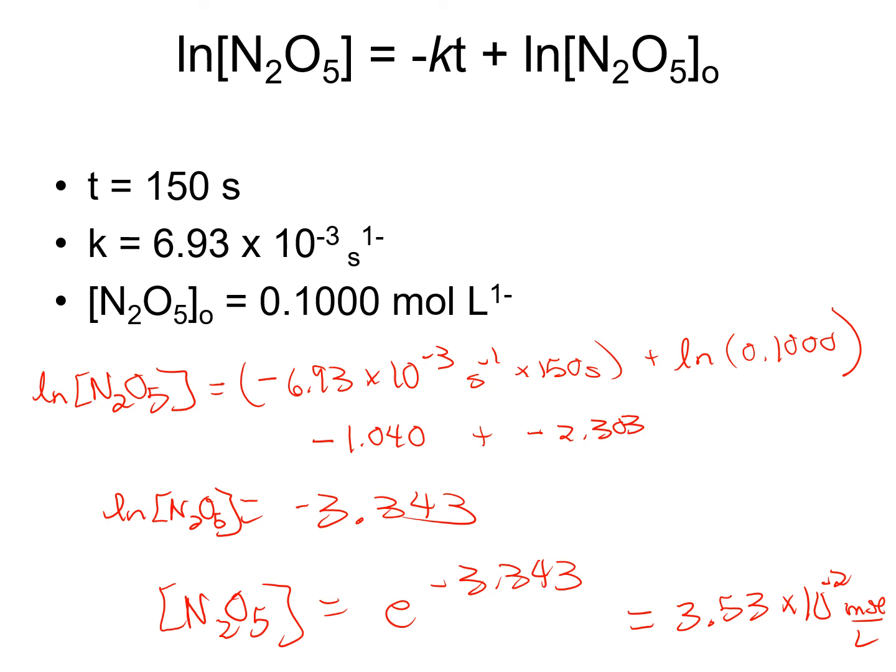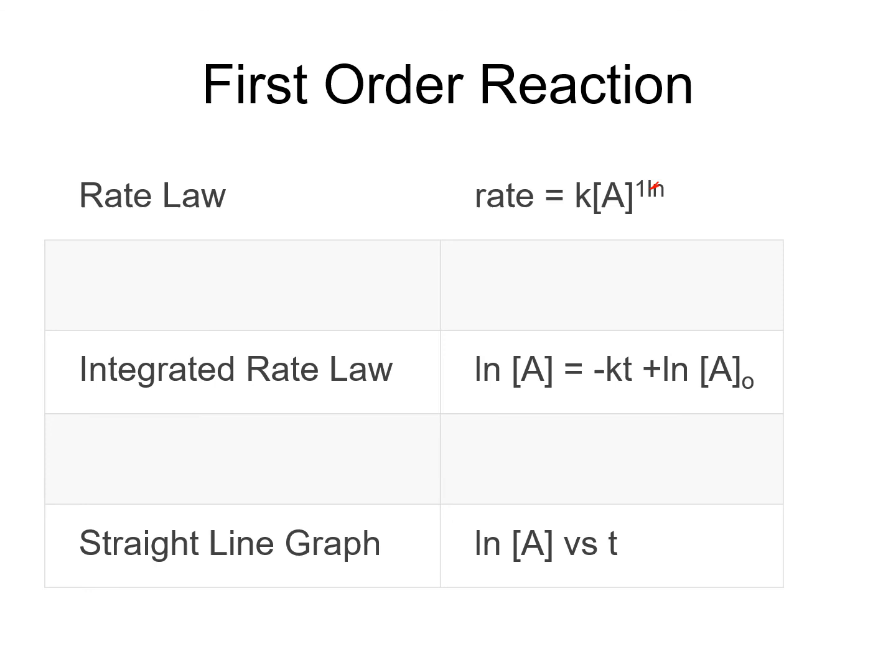In a first-order reaction, the differential rate law is rate equals k[A] to the first power. Your integrated rate law is ln[A] = -kt + ln[A]0. If you look on your reference sheet, you're going to see this written there. What you're looking for in a graph is that you have the natural log of your concentration versus time.